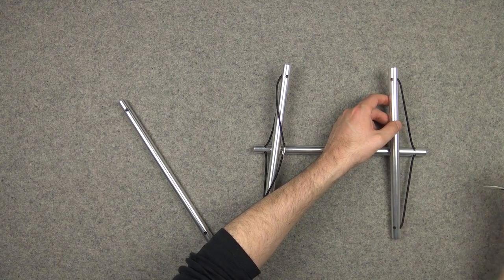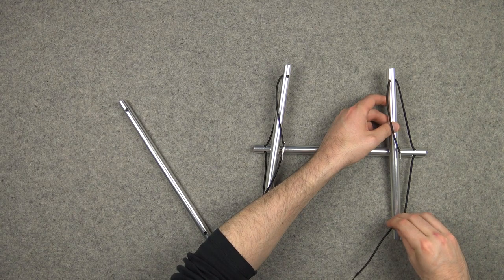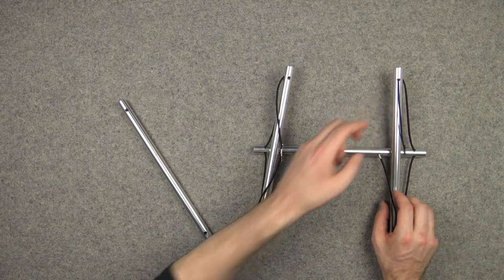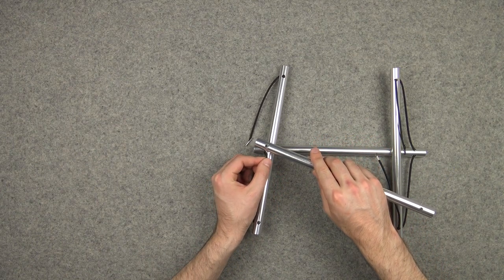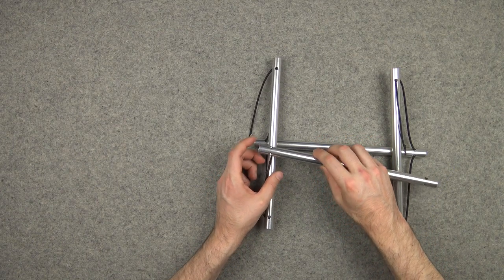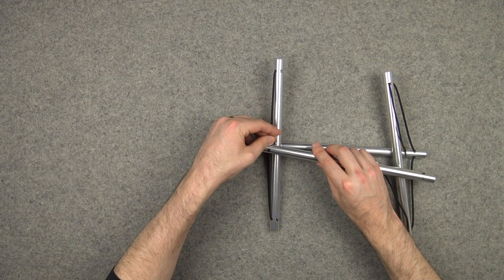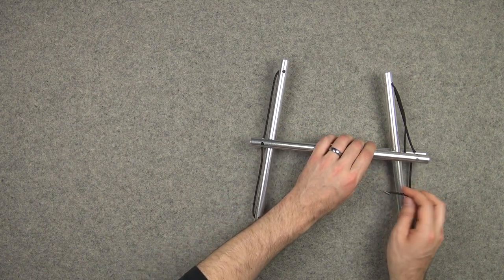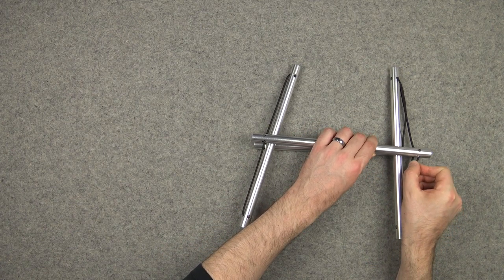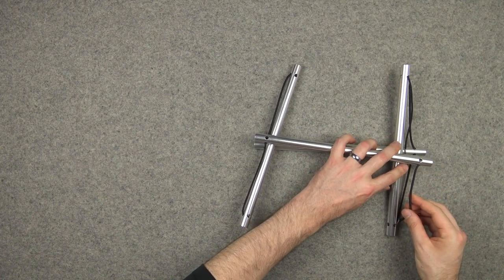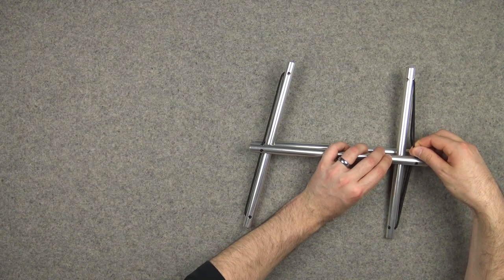And the same thing over here, the mirror image. Now we'll lay this one across. Put this cord in there, and we'll put this one in its neighbor. Same thing over here. We use the same hole we did on that side.